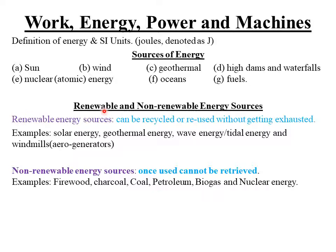Sources of energy can also be categorized into renewable and non-renewable sources. Renewable sources of energy are sources which can be recycled or reused without getting exhausted or depleted. Examples of renewable sources include solar energy, geothermal energy, wave or tidal energy, and windmills or aero generators. Renewable sources of energy are usually natural sources of energy — that is why they cannot be depleted. The sun, geothermal energy, wave or tidal energy, and wind are all naturally available.